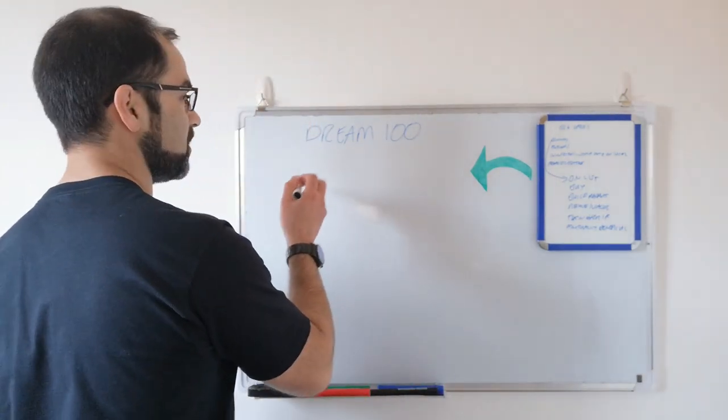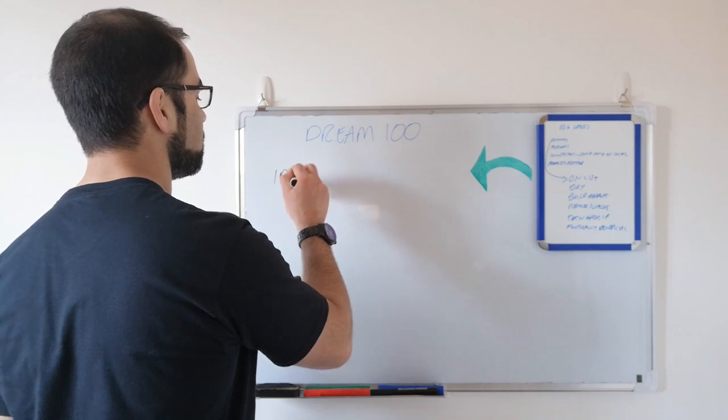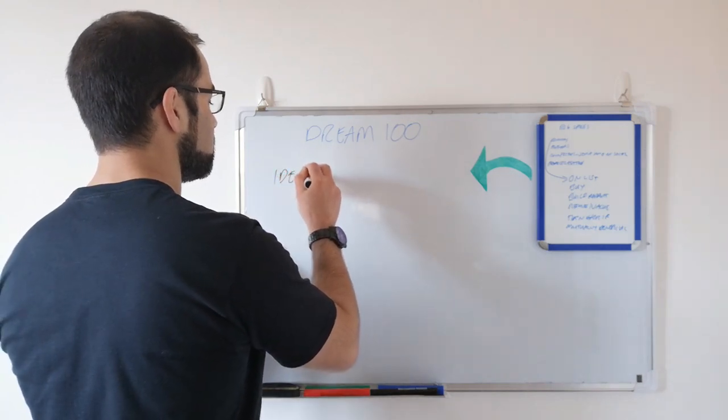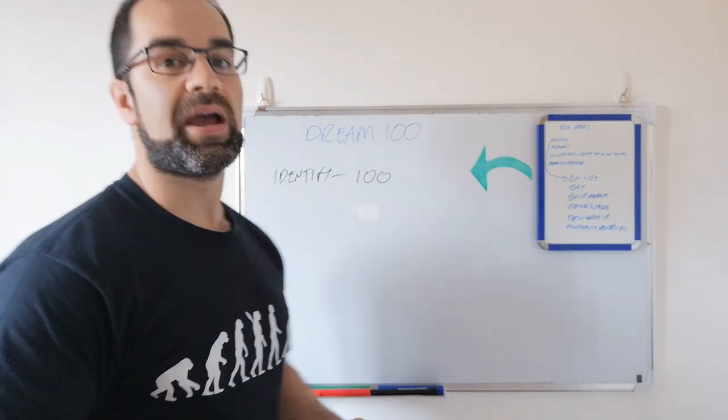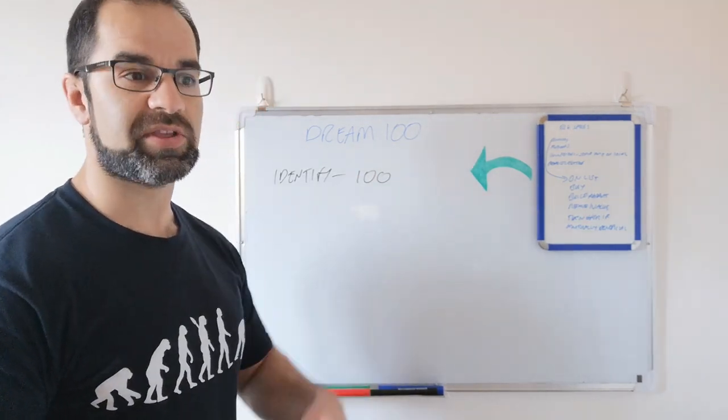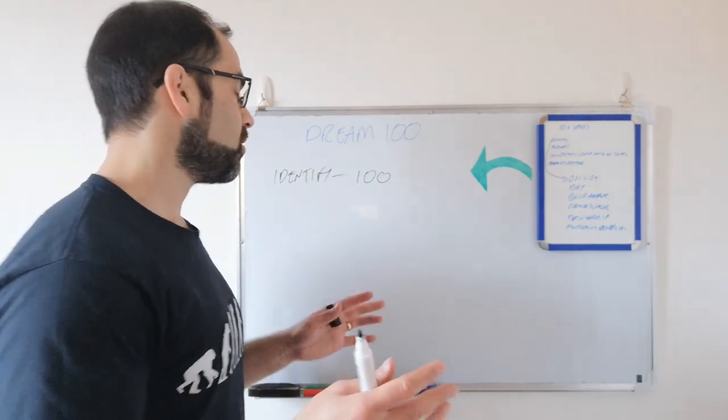So let's look at what the Dream 100 is. The first step of the Dream 100 is to identify the people—identify the 100 people that already have the eyes and ears, the attention of the exact type of people you're looking to bring into your business.